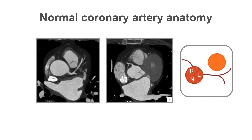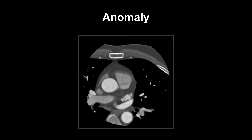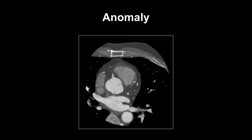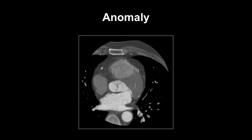Here we can see the two origins: the left main stem from the left coronary cusp and the right coronary artery from the right coronary cusp. This is a normal anatomical arrangement of the coronary arteries. Let us now look at a coronary anomaly.